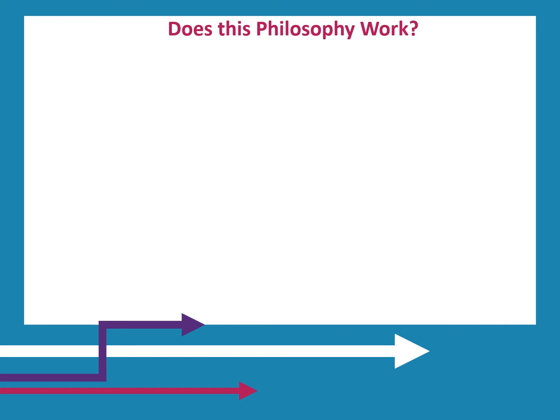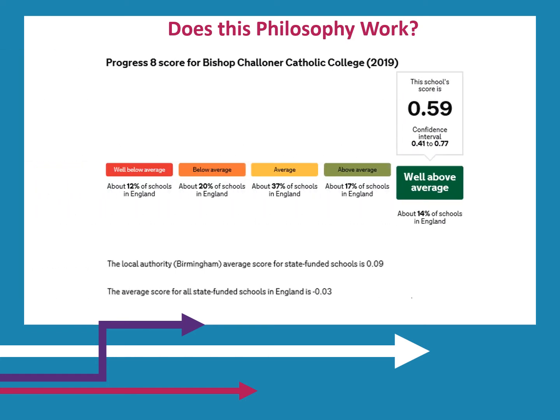Does our pathway philosophy work? This slide provides a snapshot of our Progress 8 score in 2019. We do not have the Progress 8 score for 2020 as a result of GCSE examinations being cancelled last summer. Our Progress 8 score of 0.59 tells us that on average our Year 11 students in 2019 achieved three-fifths of a GCSE grade higher than similar students nationally. These results are considered well above average, placing us in the top 14% of secondary schools in England and well above the average Progress 8 score in Birmingham schools in 2019.